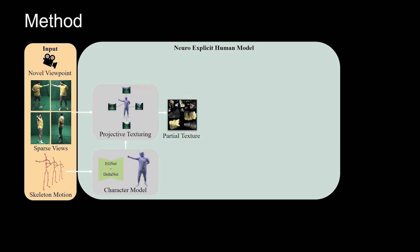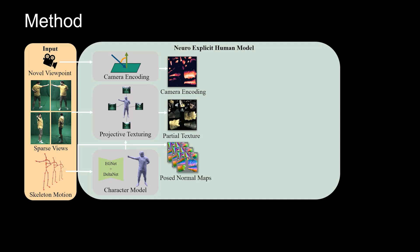In contrast to animatable representations, we want to encode the information provided in the sparse input images, such as wrinkle patterns, into our model. The texture space of our template is spatially consistent across frames and enables the use of efficient 2D convolutional architectures. We propose projective texturing, which maps the sparse views onto the deformable mesh's texture space. We also encode the input view direction in texture space to capture view-dependent effects, and render a temporal stack of pose-normal maps in texture space to efficiently encode surface geometry and dynamics.